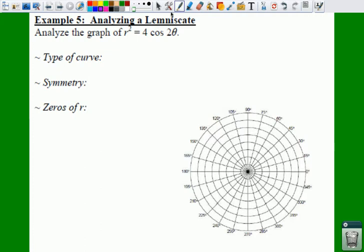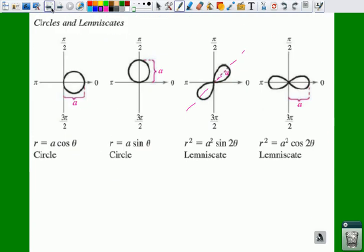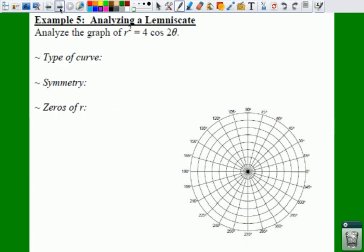Now we know this is a lemniscate because it tells us in our example, but the other way we can tell this is a lemniscate is because it's the only one with an r squared. R squared? R squared. It's a lemniscate.